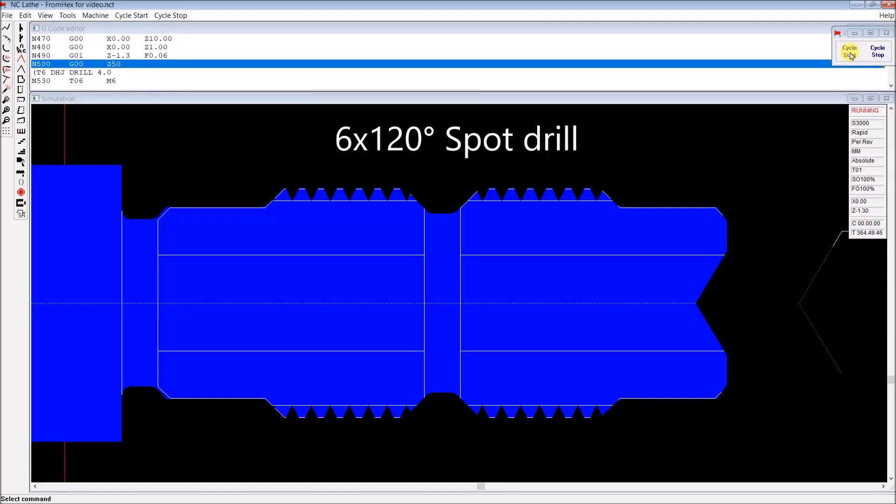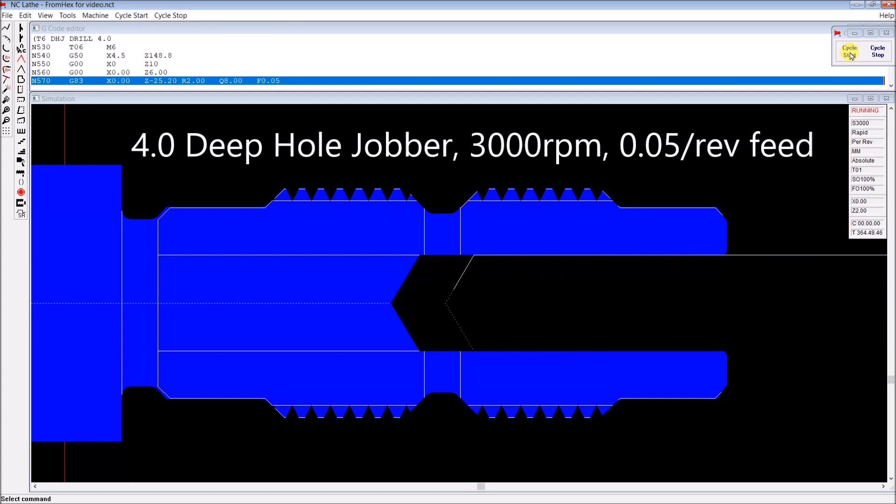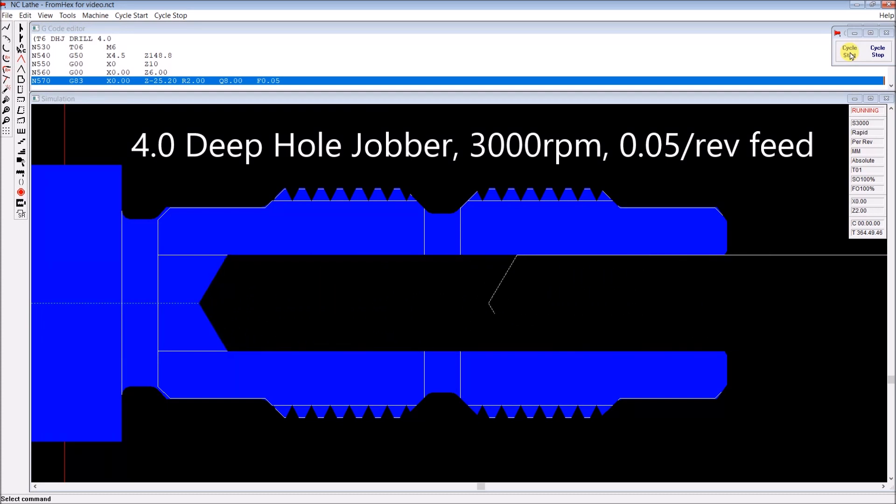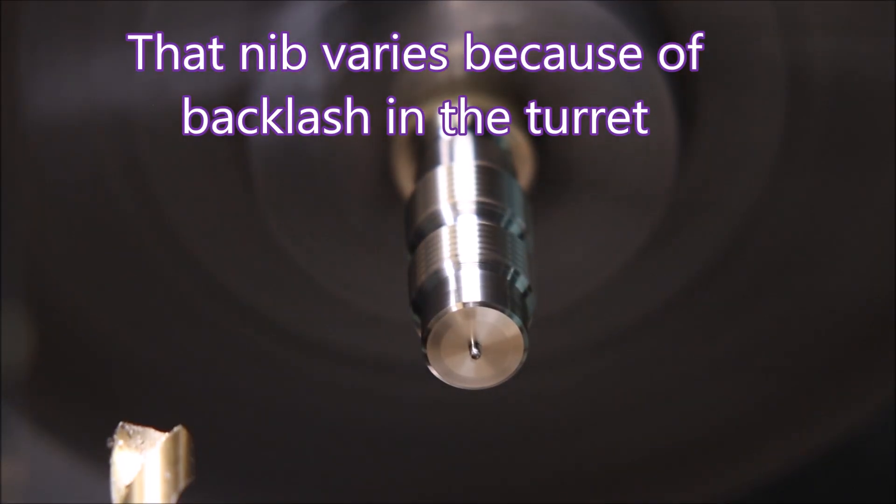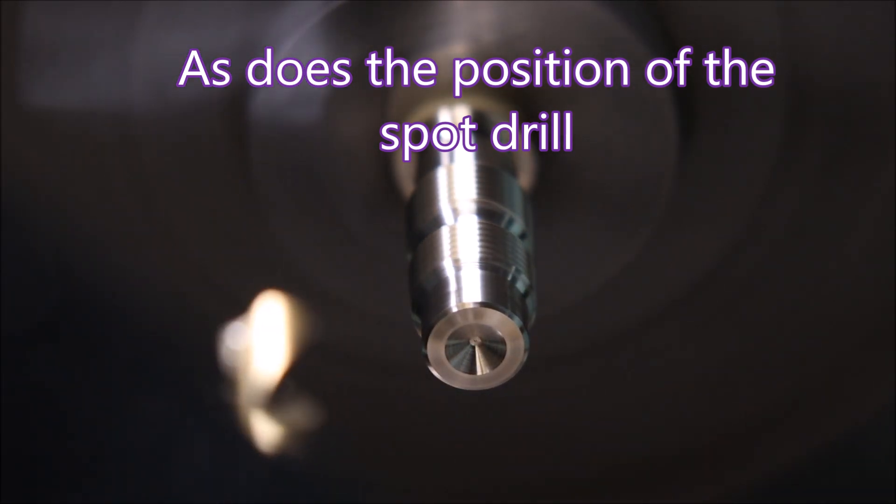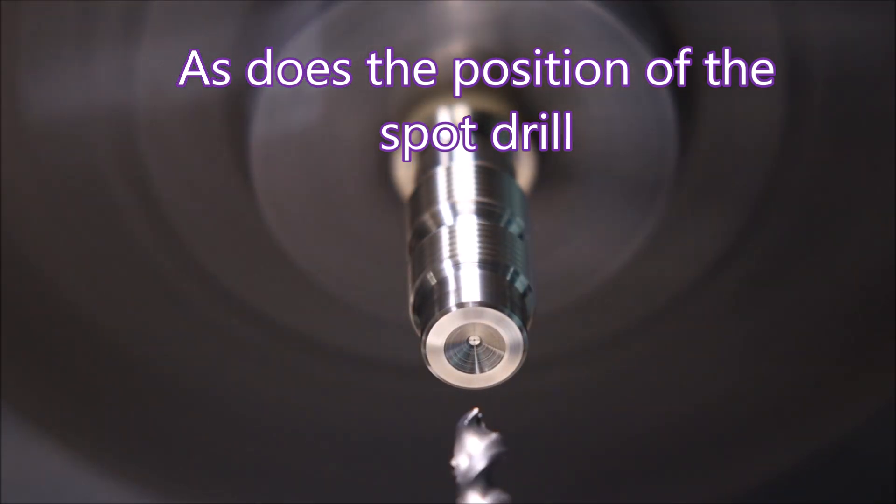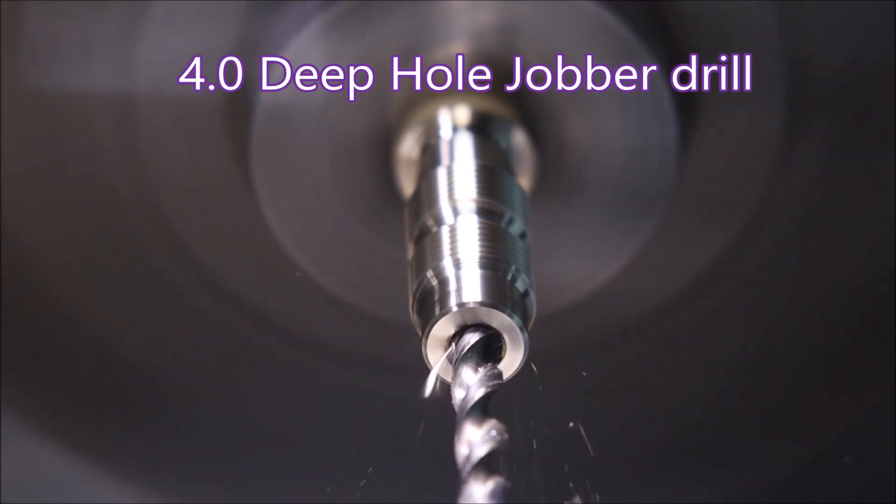Now I'll have a quick look at the simulation of the spot drill and the deep hole jobber. In the simulation I have four pecs. In the actual machining there are only three. Here you'll see the spotting drill jump about a bit which is again the turret backlash. That drill should be rigid enough to just remove that little nib that was there without a problem.